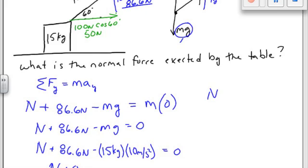Normal force plus 86.6 newtons minus 150 newtons equals zero. So the normal force equals 63.4 newtons.